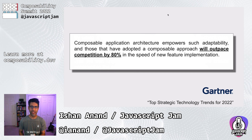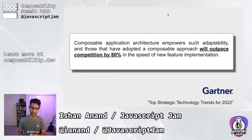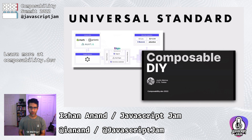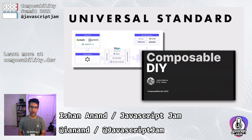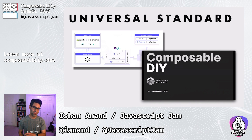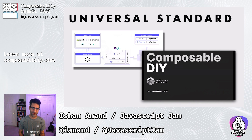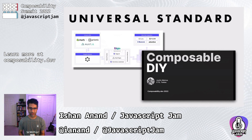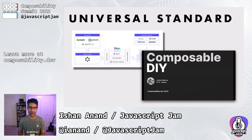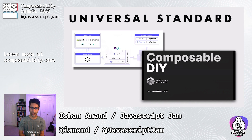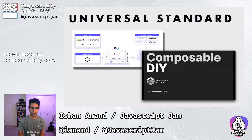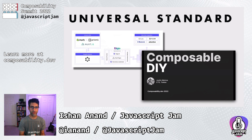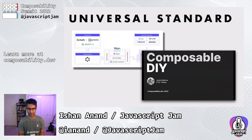A great example of that is Universal Standard. The apparel store had to shutter all their stores because of the pandemic. It was at that time their CTO, Justin Metros, decided to migrate to composable architecture using Nuxt, Shopify, and a variety of other tools.